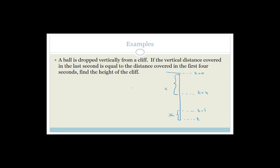So we need to think about this and get some simultaneous equations going. For the first four seconds: initial velocity is zero, acceleration is 9.8 (choosing downwards as positive), displacement is x, time equals 4 seconds. During the last second: the initial velocity we don't know, acceleration is 9.8, change in time is 1 second (which is t minus (t−1)), and delta x is also x. The final velocity is not zero — please, grade 12, if something is falling from a cliff, the final velocity is not zero.